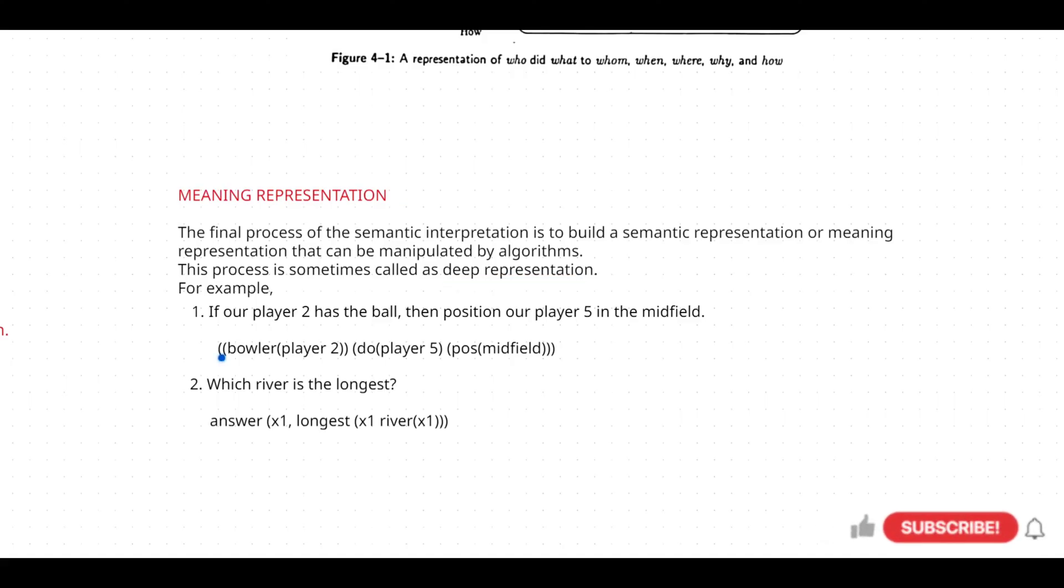Let's take this first example: if our player 2 has the ball, then position our player 5 in the midfield. What it means is if player 2 is having the ball with him, then you have to place player 5 in the midfield. How are we going to represent it? Take this representation and let's understand it.